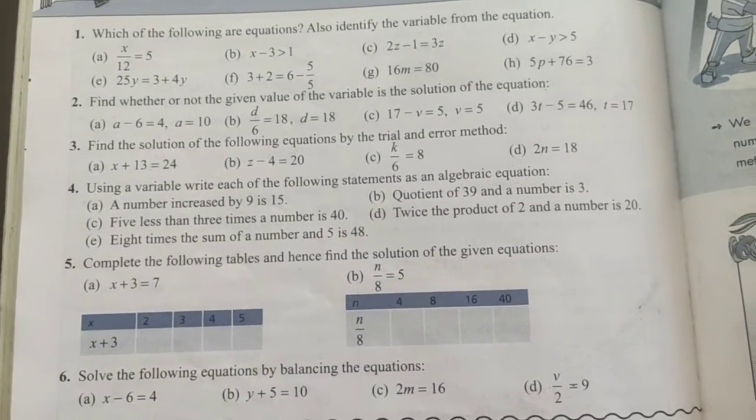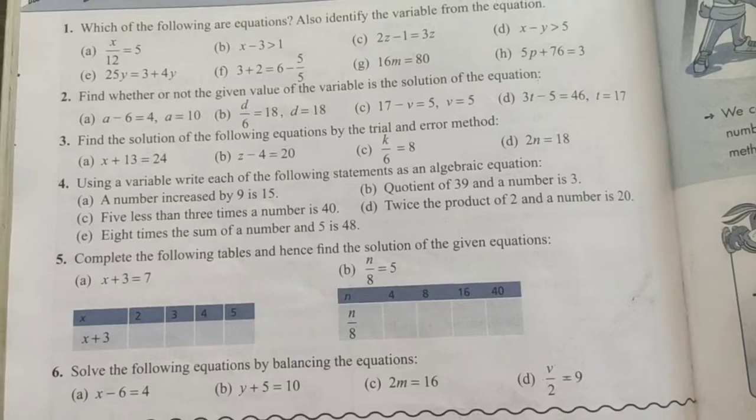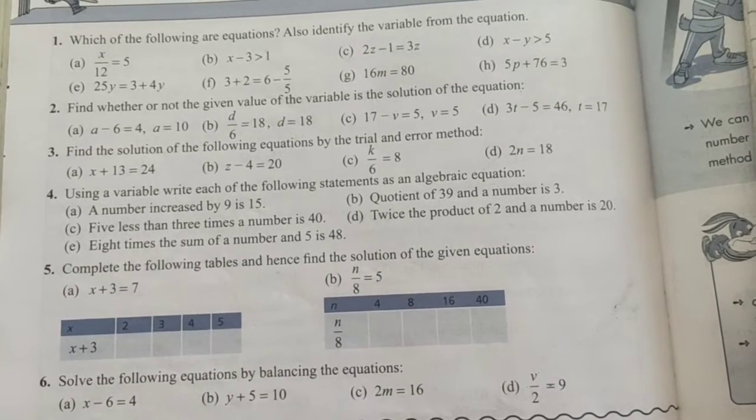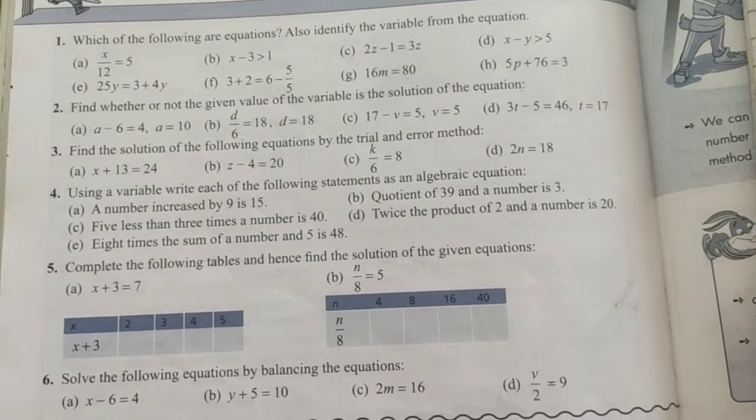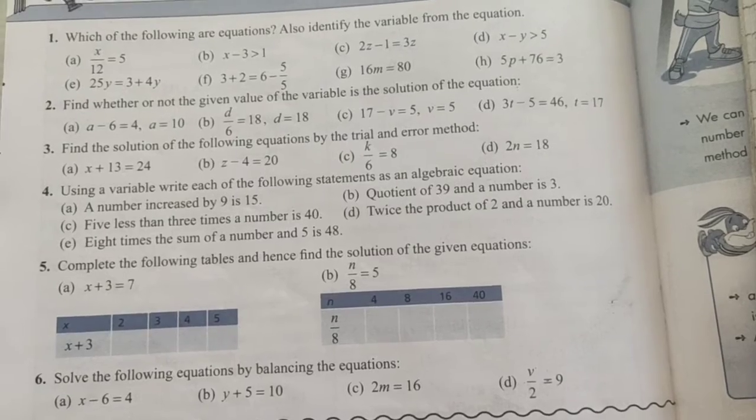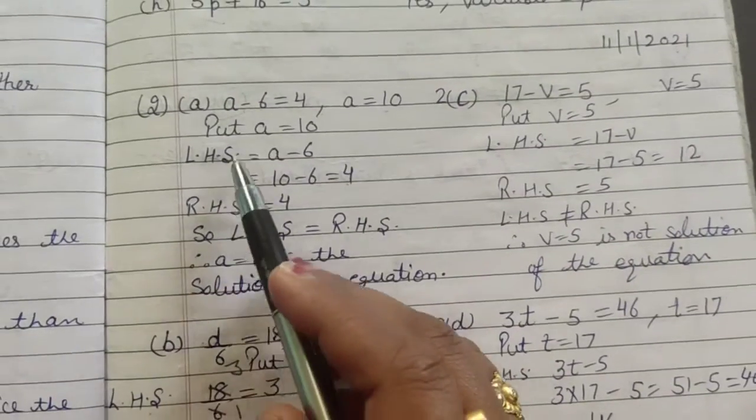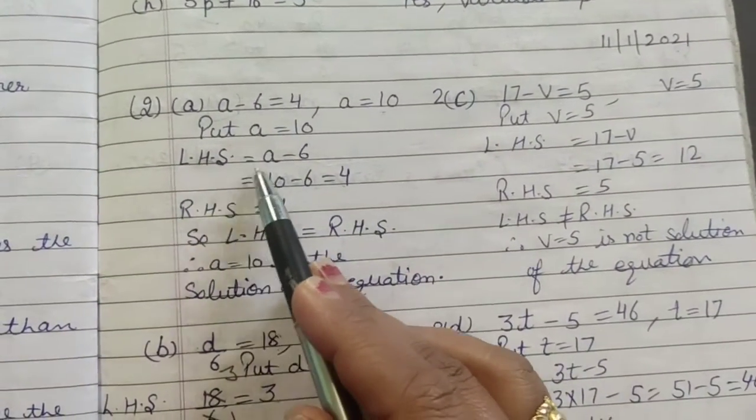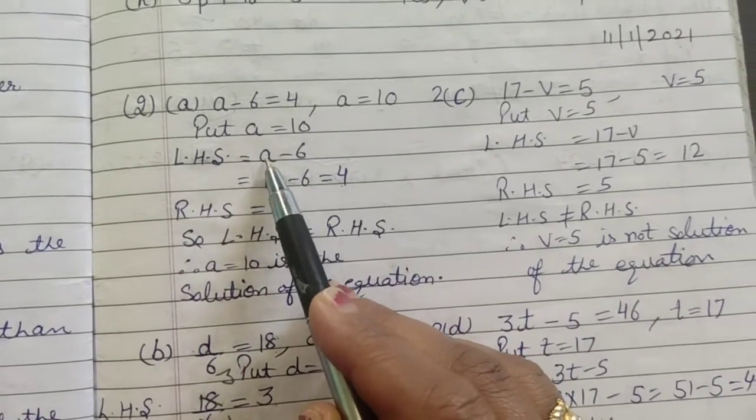Otherwise, if our answer is not 4, it means a equals 10 is not the solution of the given equation. So look, I've written a minus 6 as the left hand side, now in place of a I will put 10.